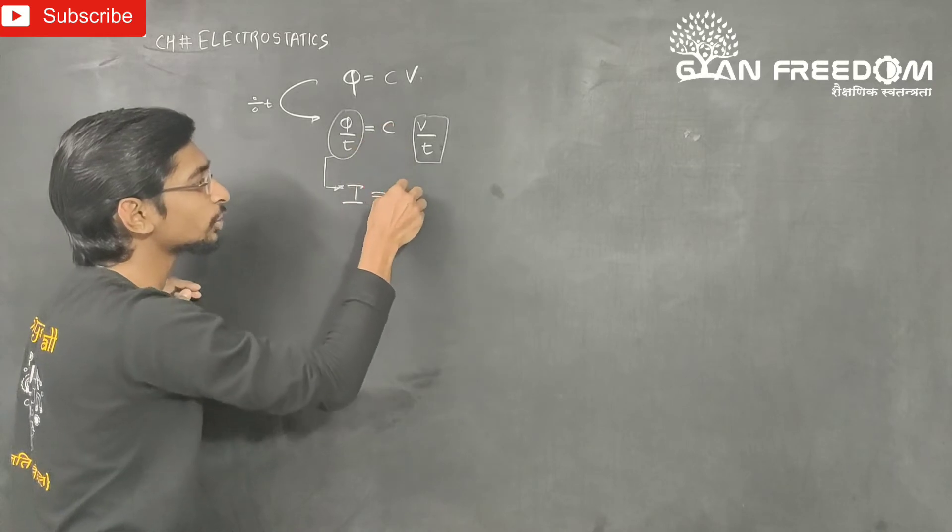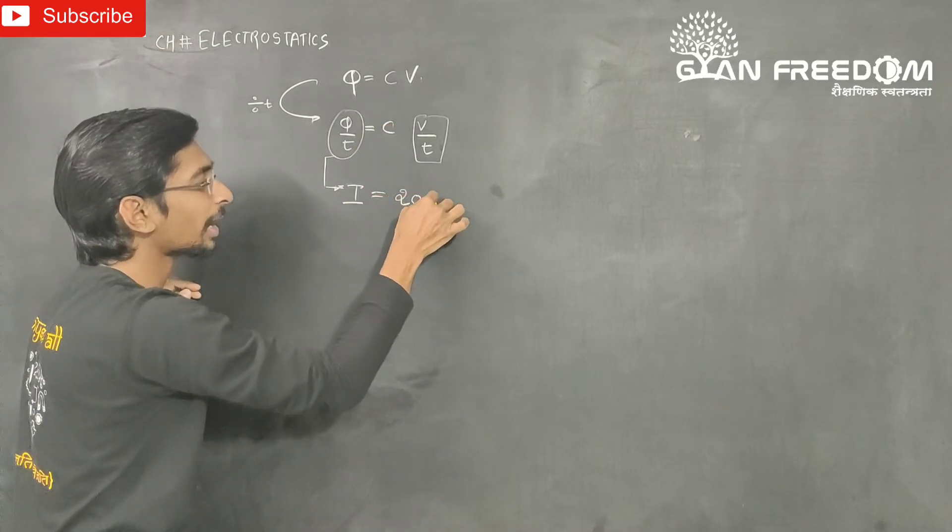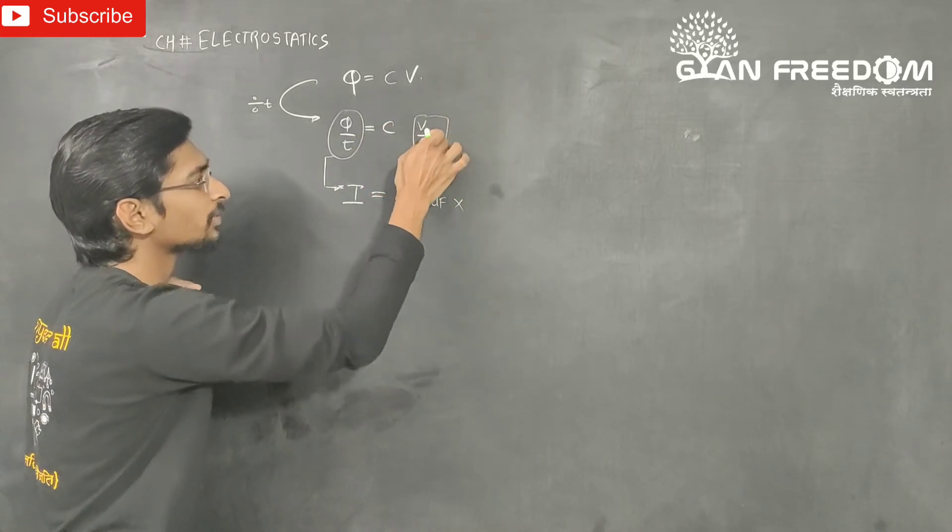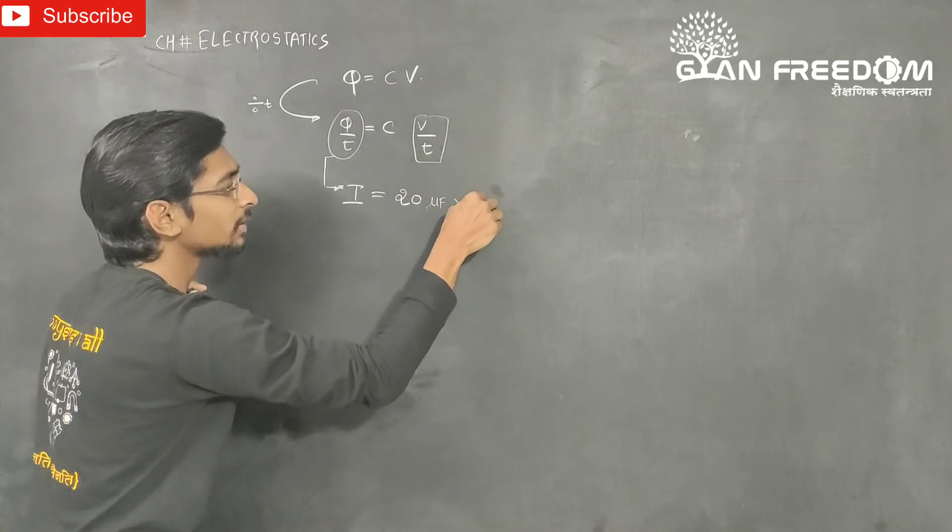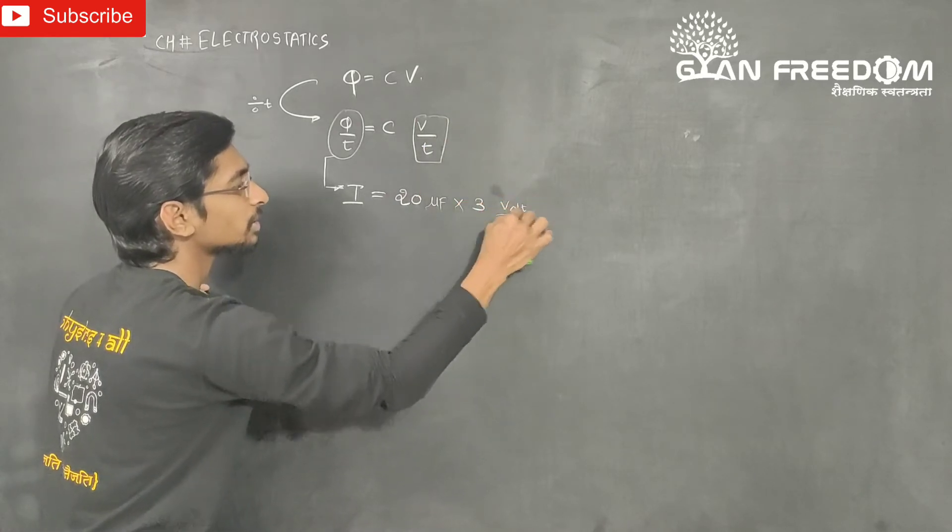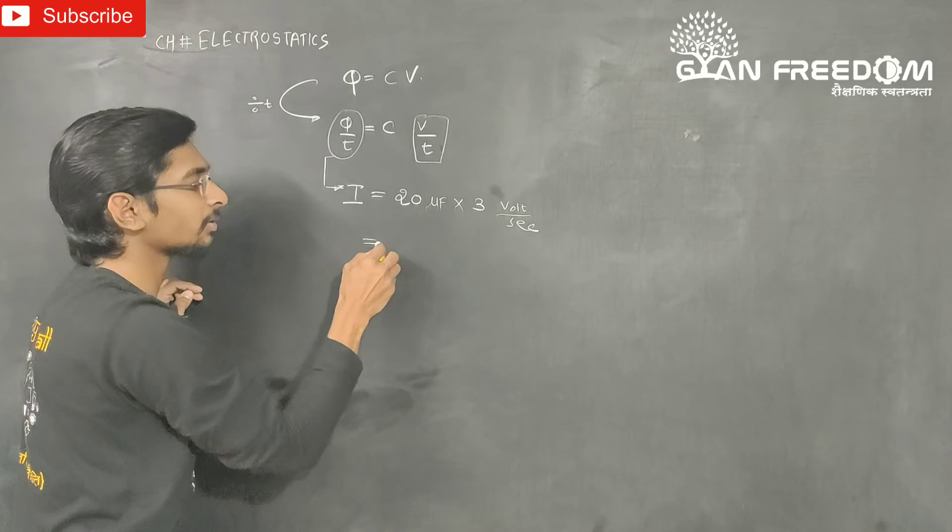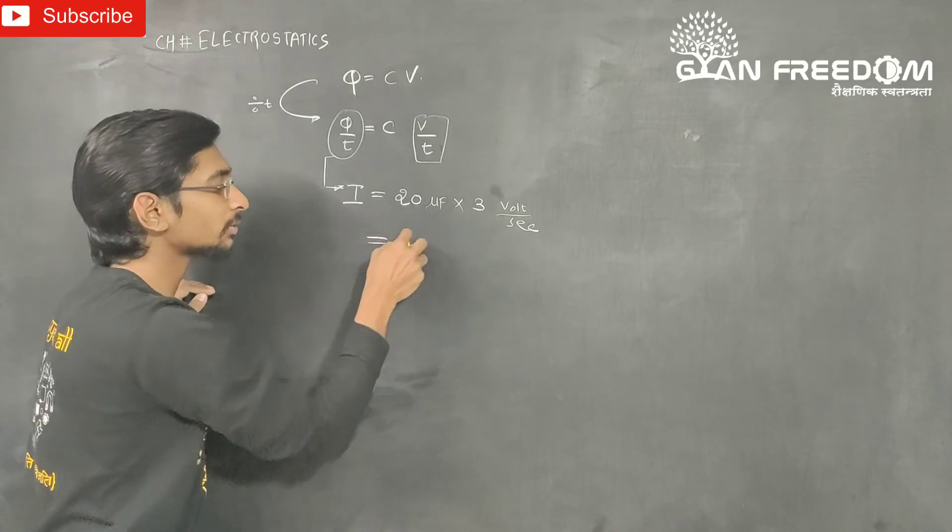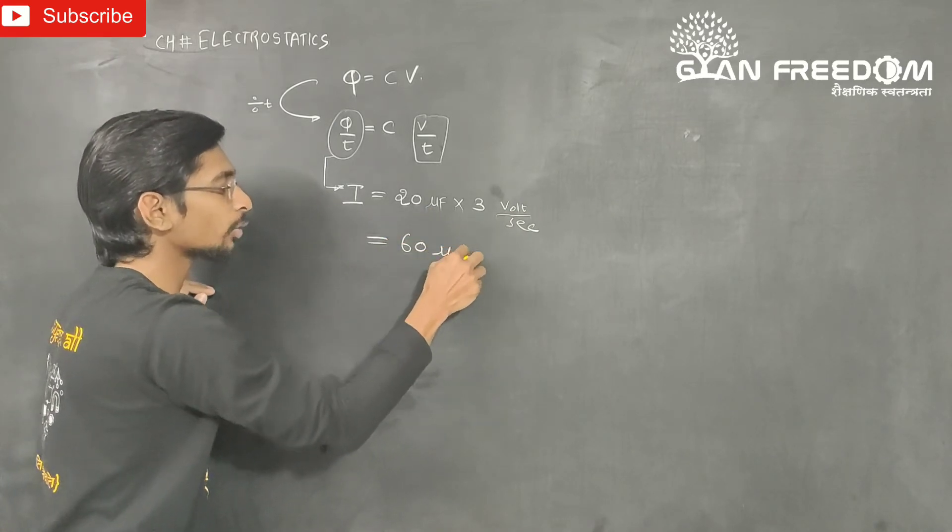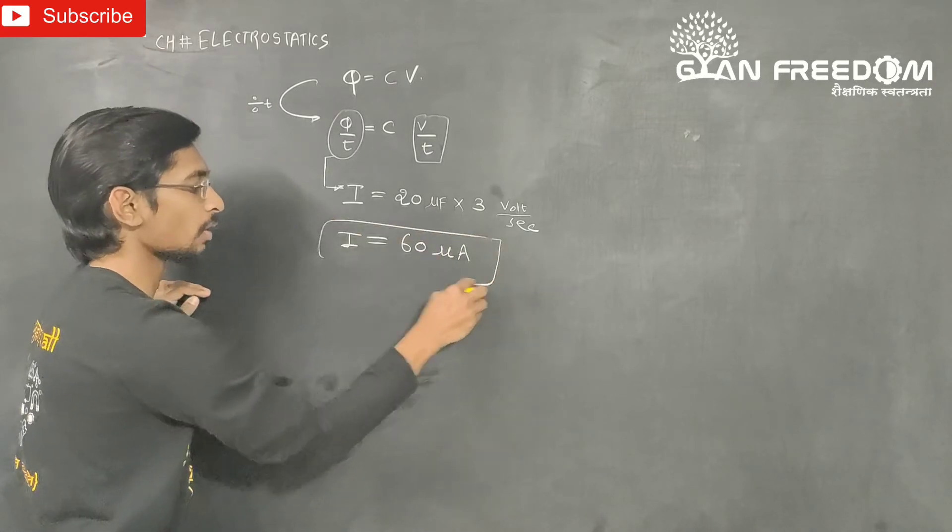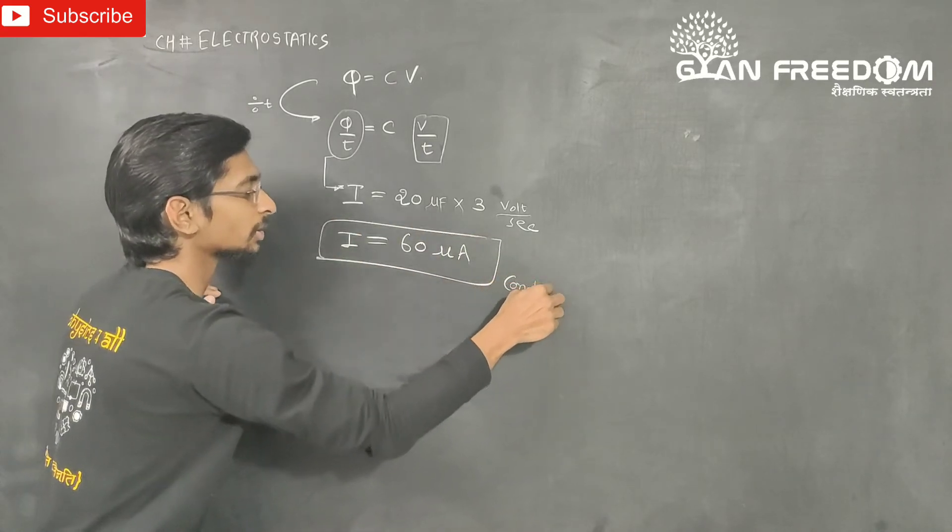So conduction current is 20 microfarad times V by T which is 3 volts per second. So the answer will be 20 into 3, which is 60 micro ampere. This will be the answer for conduction current.